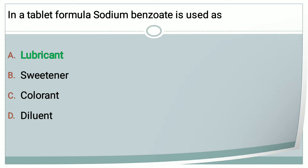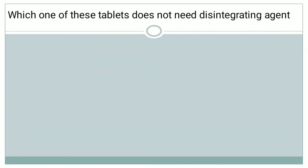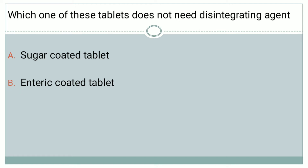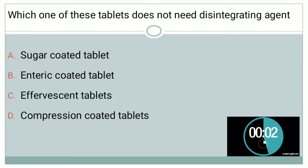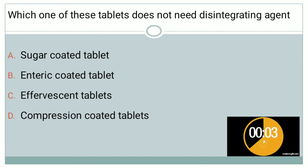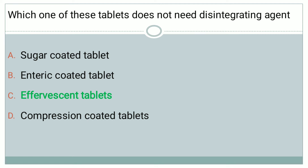Next question: which one of these tablets does not need a disintegrating agent? Options are: A — sugar coated tablets, B — enteric coated tablets, C — effervescent tablets, and D — compression coated tablets. The correct answer is effervescent tablet.